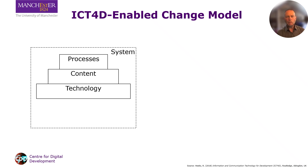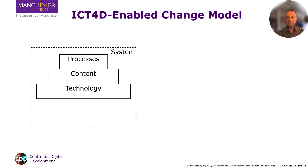Our model starts with a basic information system built on a foundation of technology that could be either analogue or digital, of data content and processes of information production, decisions and transactions. This could be anything from paper records to a simple mobile phone-based app to a cloud and server-based platform.